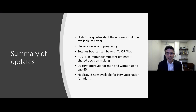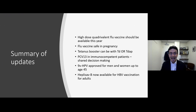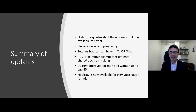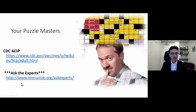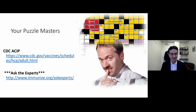Here's a summary of updates: The high-dose quadrivalent flu vaccine should be available this year. Flu vaccine is safe in pregnancy. Your tetanus booster can now be Tdap, which simplifies things. Prevnar in immunocompetent patients is now shared decision-making. Gardasil is now approved for both men and women through age 45. And Heplisav-B is now available for hepatitis B vaccination in adults. The best resource I can leave you with is the website 'Ask the Experts,' arranged by vaccine with the most frequently asked questions — the ACIP panel gives data-driven answers. I'll pause there and take questions.